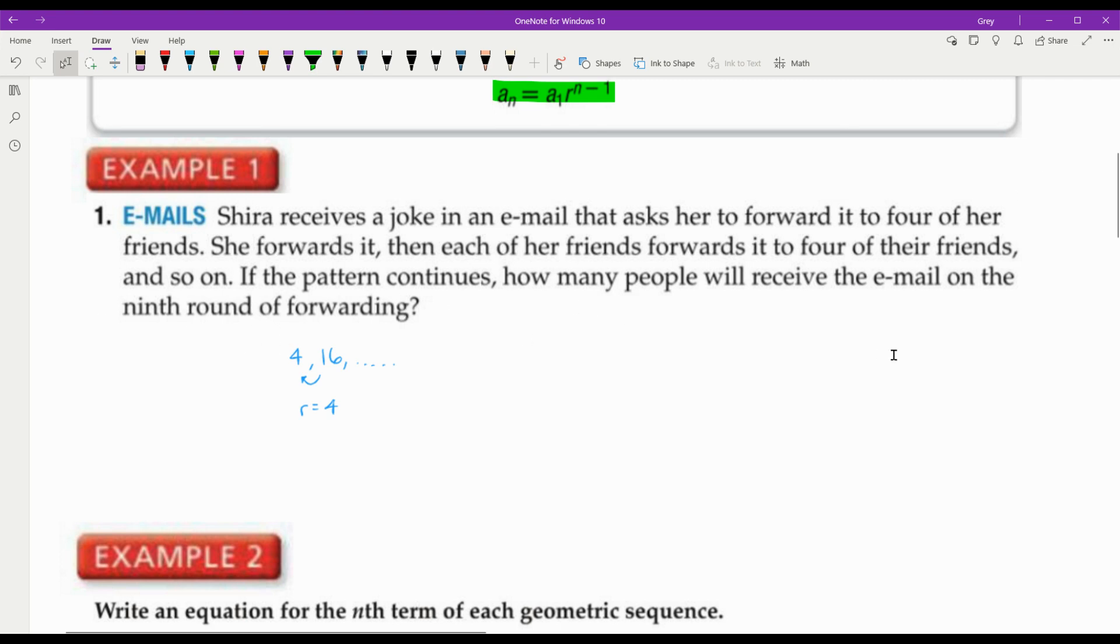So if I put 16 over four, then I find that r is equal to four. How many people will receive the email on the ninth round of forwarding? Yes, you could just keep going, but sometimes you'll be asked to do something that is not that easy just to keep going. So I'm going to do it with the formula. We've got A sub n equals A sub 1 times r to the n minus 1. I'm going to write the general formula first. A sub 1 is 4, and my r is 4. If I'm looking for the ninth term, A sub 9 is going to be 4 times 4 to the 9 minus 1. When you plug that in your calculator, you're going to get 262,144 people.